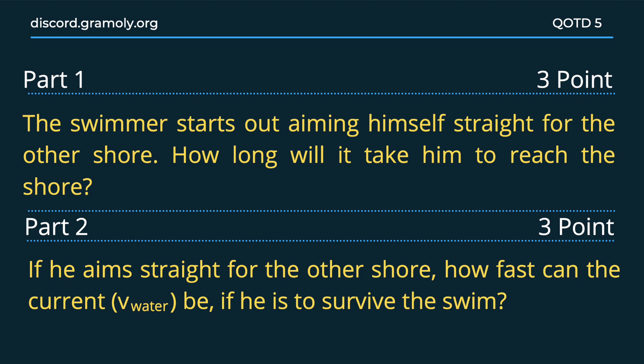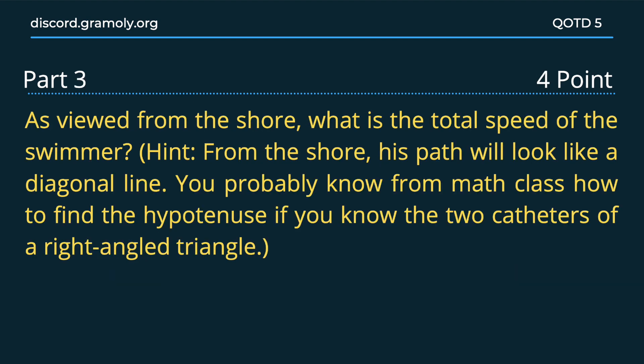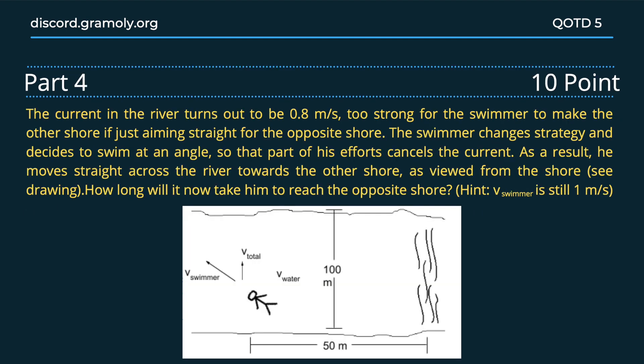The second part: if he aims straight for the other shore, how fast can the current be if he is to survive the swim? The third part: as viewed from the shore, what is the total speed of the swimmer?